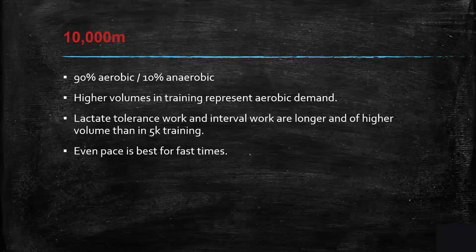The 10K is 90% aerobic and 10% anaerobic. Higher training volumes represent the aerobic demand — lactate tolerance work and interval work are longer and of higher volume than in 5K training. Even pace is best for faster times. If you're a track nerd, go back and look at the World Championships in Qatar and the 10K splits — they're pretty amazing.